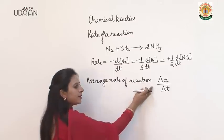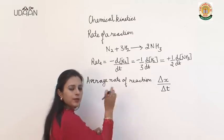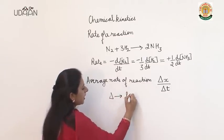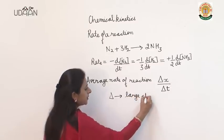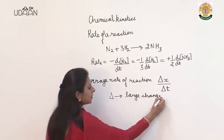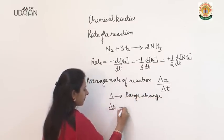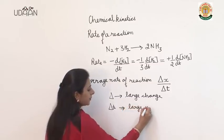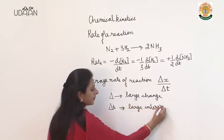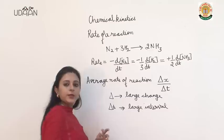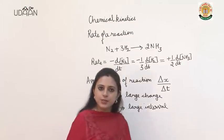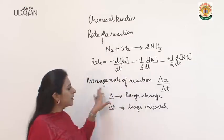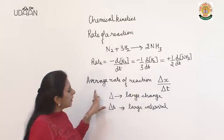Now what is the difference between delta and d? Delta represents a large change, so delta t means over a large interval. Rate of change in concentration over a large interval of time is known as average rate.